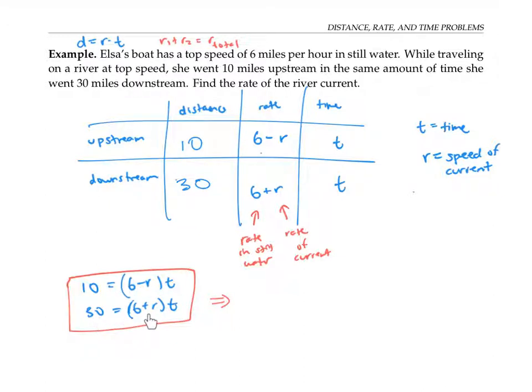That gives me 10 over six minus r equals t, and 30 over six plus r equals t. Now if I set my t variables equal to each other, I get 10 over six minus r is equal to 30 over six plus r.